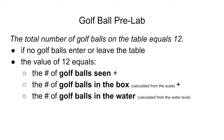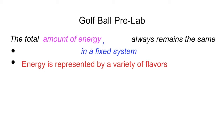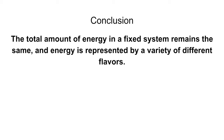So in conclusion, let's piece this all together. The total number of golf balls we're going to replace with the total amount of energy. We're going to replace the table with a fixed system. And saying it equals 12 is arbitrary — the point is that it always remains the same. So that first sentence is: the total amount of energy in a fixed system always remains the same. And energy is represented by a variety of flavors — there are different ways that we can find how energy is stored. In conclusion: the total amount of energy in a fixed system remains the same, and energy is represented by a variety of different flavors.